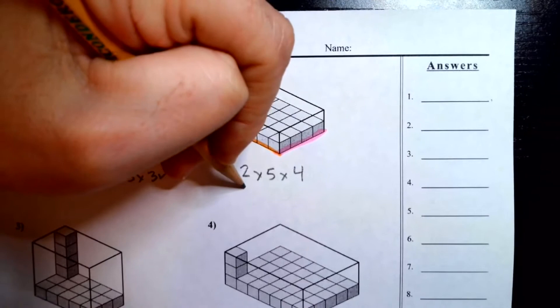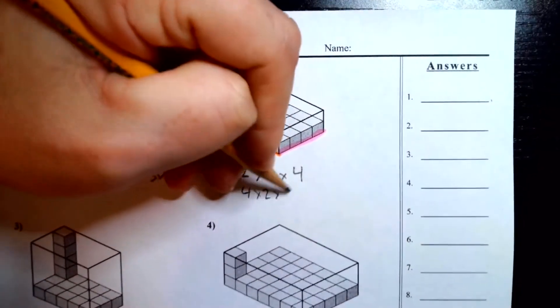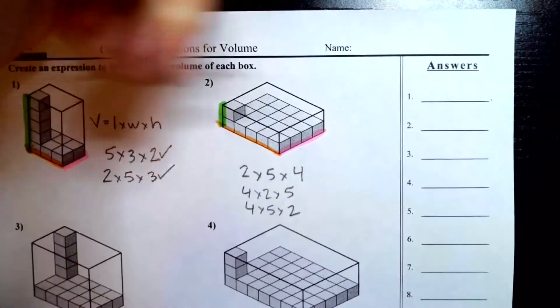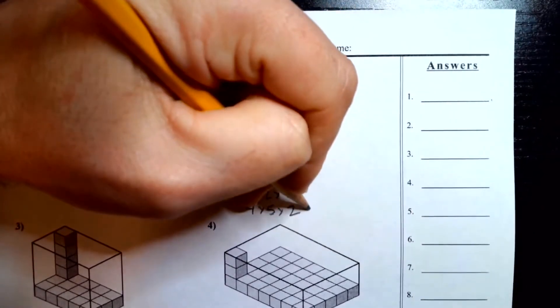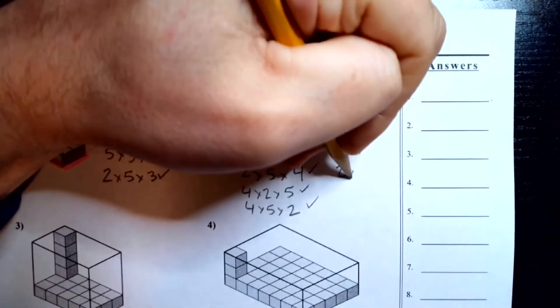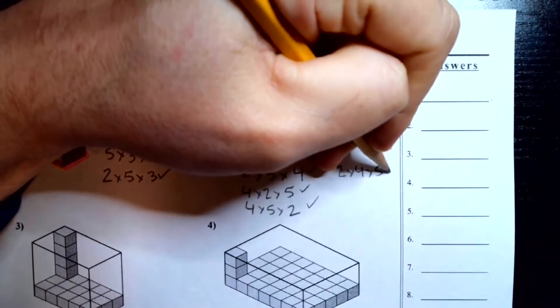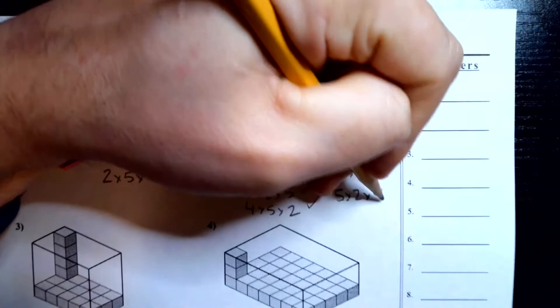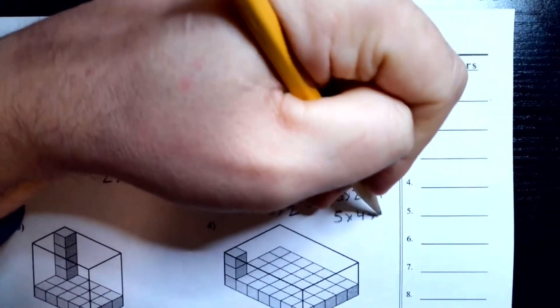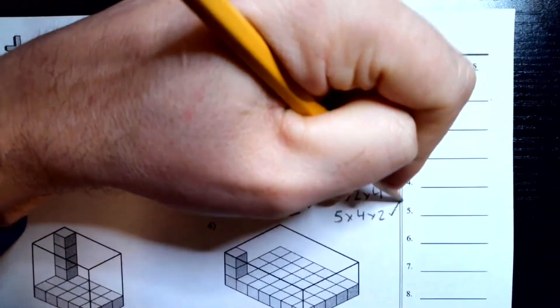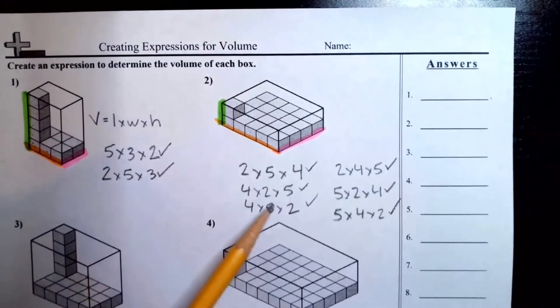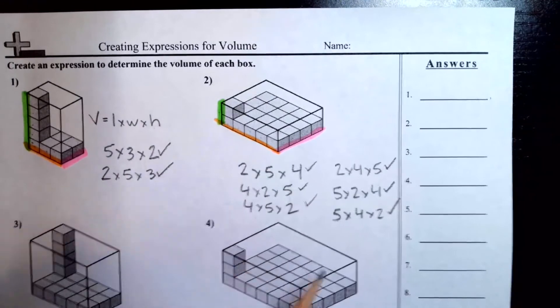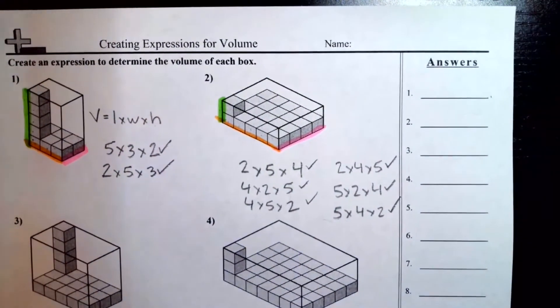And again, you could do four times two times five, four times five times two. These all work. We could do two times four times five. We could do five times two times four, five times four times two. Just look at all the different possible combinations that you have with just three numbers. So any of those would work.